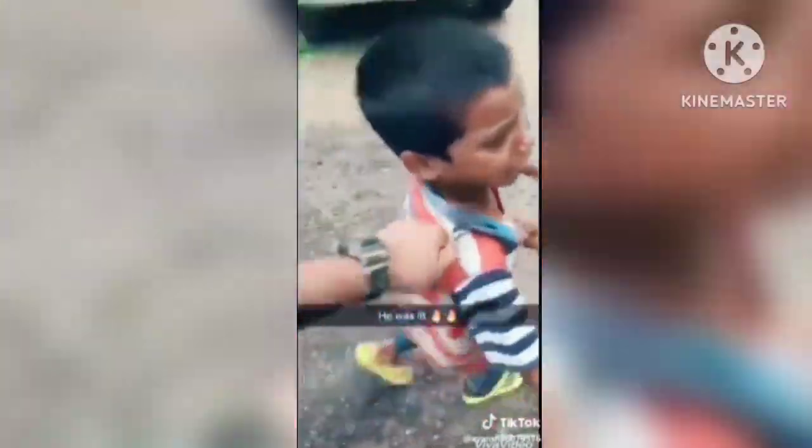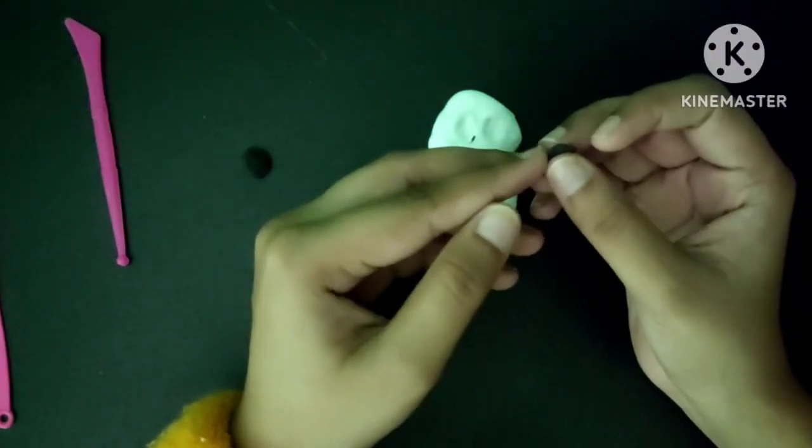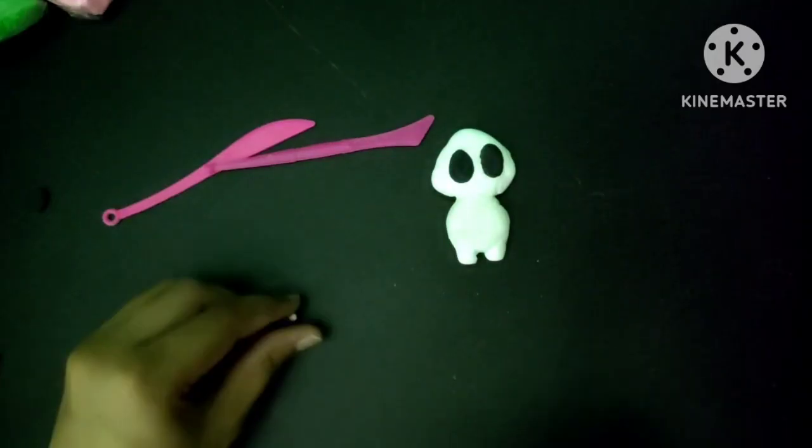Then you can make two balls like this. You have to make a pair of two balls. Make two little balls in black clay. Now, make two little balls in white clay.